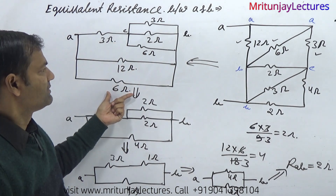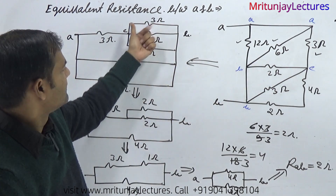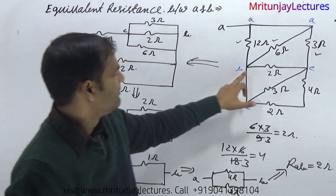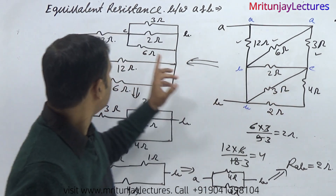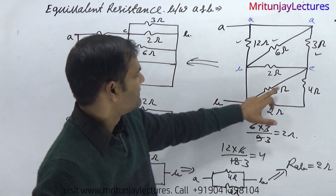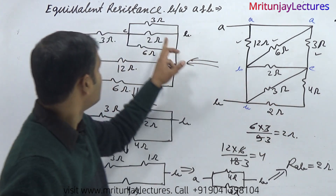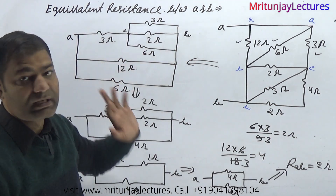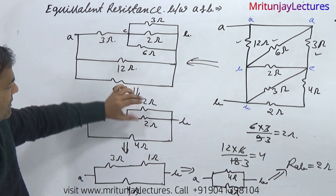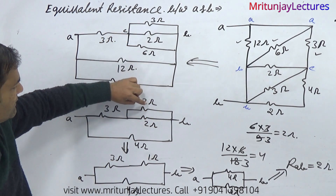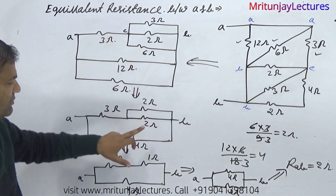A and B that is 12 and 6. After that A–C is 3 ohm, and B–C is 2 ohm, and that is 3 ohm, and that is 6 ohm. So 2, 3, and 6 are in parallel. Combination of these three: we got 2 ohm. Combination of 3 and 6 that is 2 ohm.